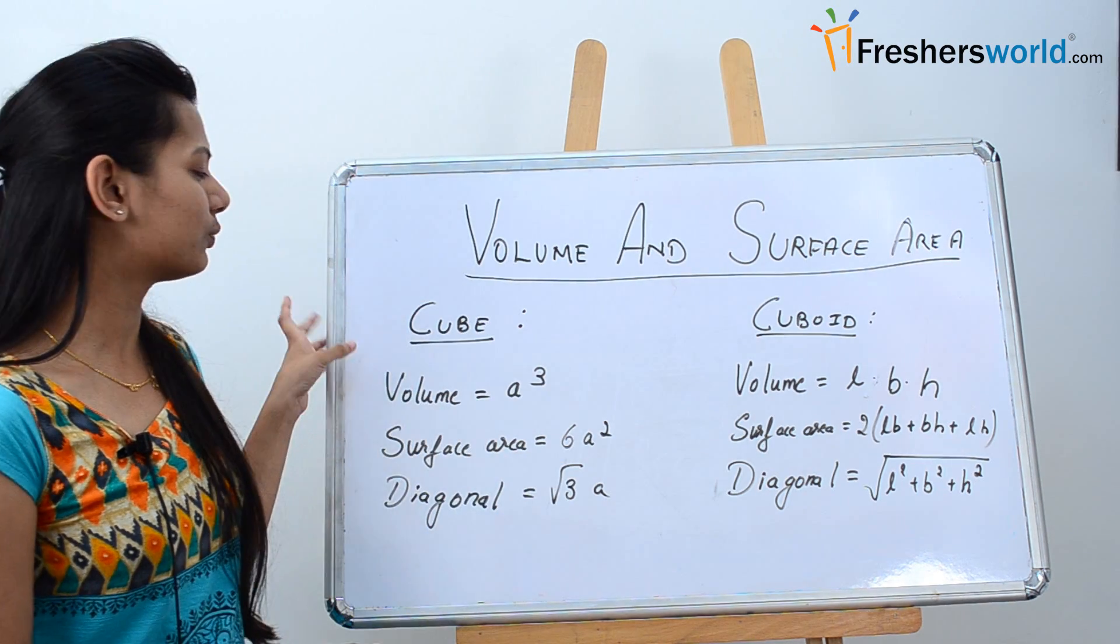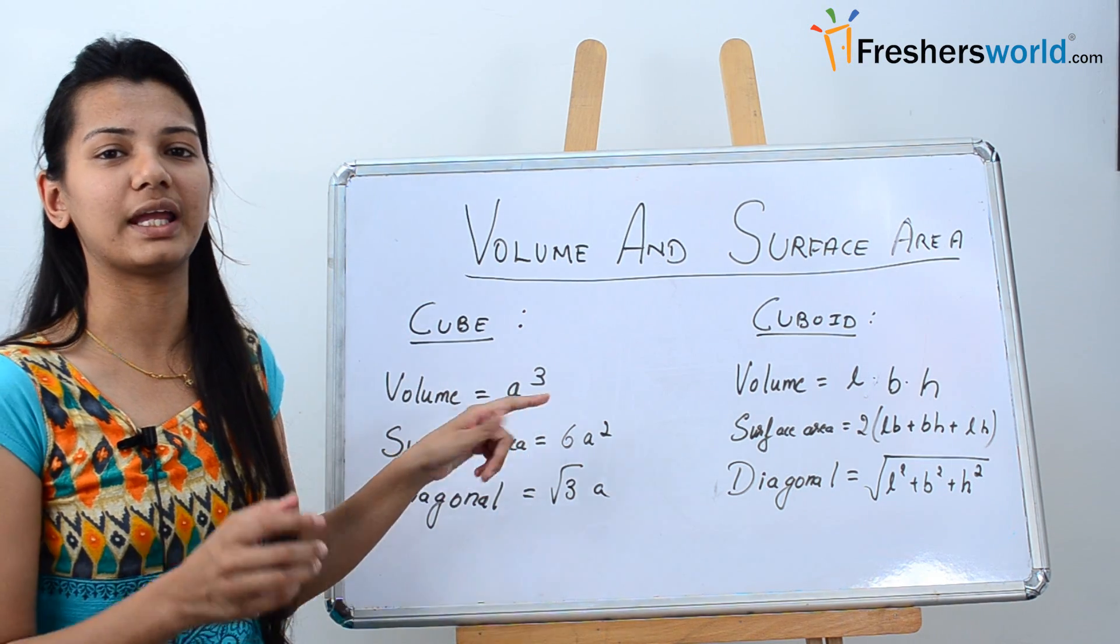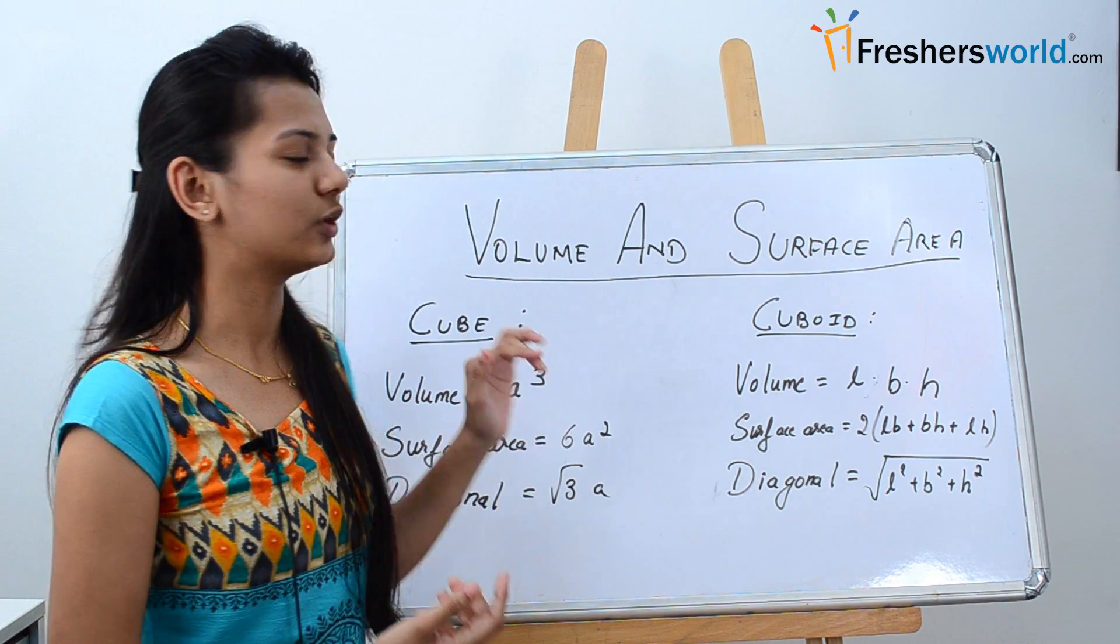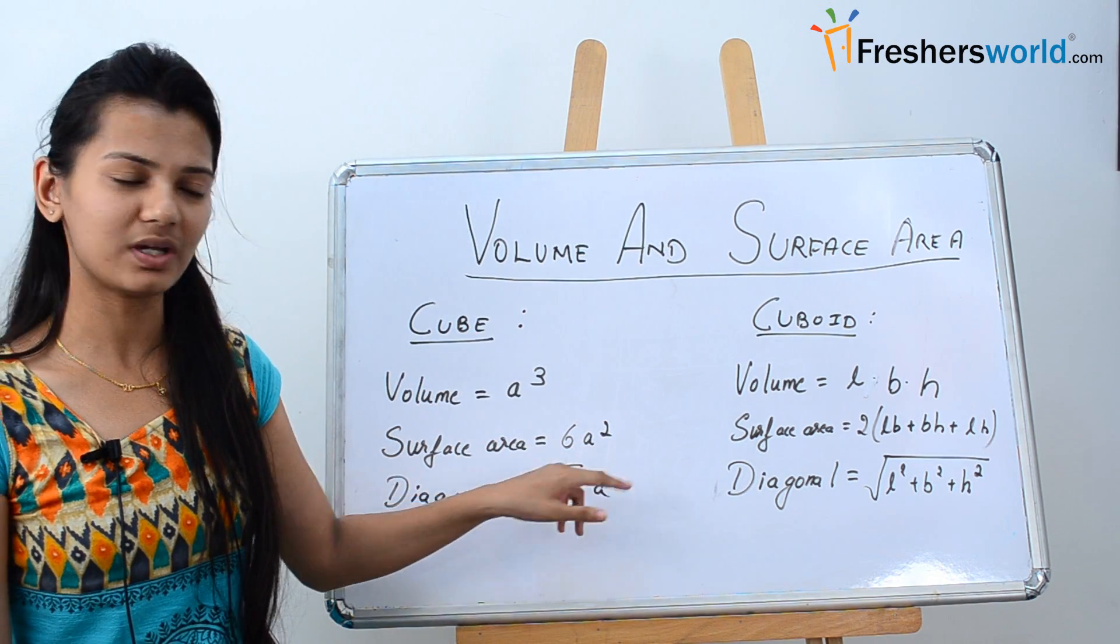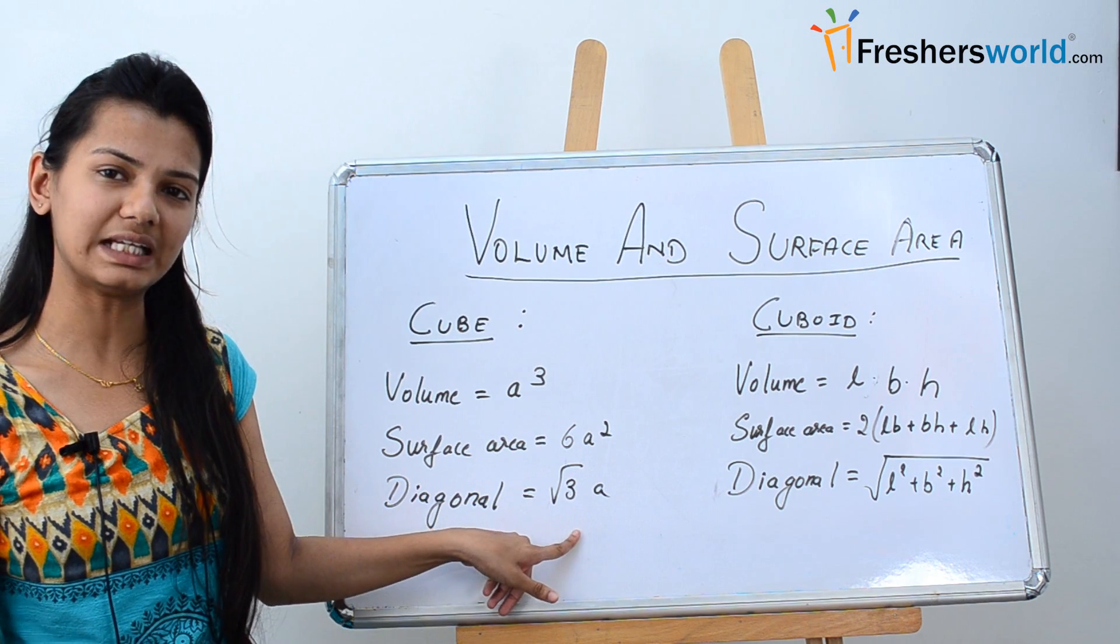For a cube, the volume of the cube is given by a cubed. For any cube with an edge a, the volume is a cubed. The surface area is given by 6a squared and the diagonal is given by root 3a.